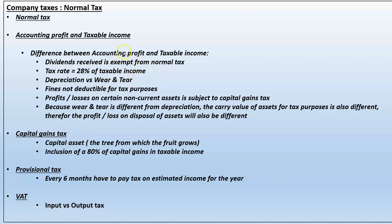Our accounting profit is the first line item we use in order to calculate taxable income. Once we have our accounting profit for the year, we can do the necessary adjustments according to the tax act in order to calculate our taxable income.